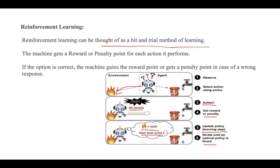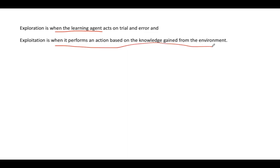Another example: imagine you are dropped off at an isolated island — you would panic initially, but as time passes you learn how to live there. You explore the environment, understand the climate conditions, the type of food that grows there, and the dangers of the island. This is exactly how reinforcement learning works: an agent placed in an unknown environment must learn by observing and performing actions that result in rewards. Exploration is when the agent acts on trial and error; exploitation is when it acts based on knowledge gained from the environment.